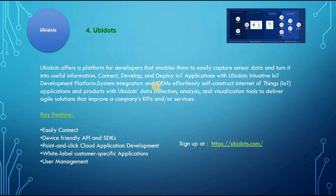The next one is Ubidots. Ubidots offers a platform for developers that enables them to easily capture sensor data and turn it into useful information. Connect, develop, and deploy IoT applications with Ubidots' IoT development platform. System integrators and OEMs can effortlessly self-construct Internet of Things applications and products with Ubidots' data collection, analysis, and visualization tools to deliver agile solutions that improve a company's KPIs or services. The key features are: easily connect, device-friendly API and SDKs, point-and-click cloud application development, white-label customer-specific applications, and user management.